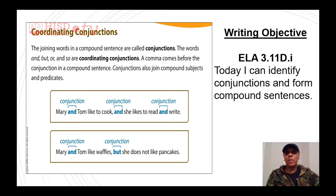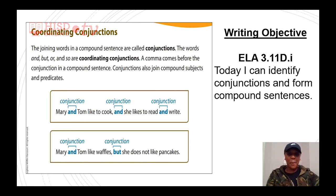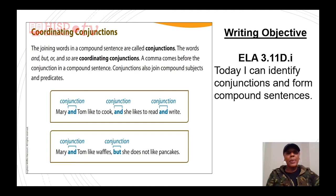Conjunctions can also be used to join compound subjects and predicates. For example: 'Mary and Tom like to cook, and she likes to read and write.' In this sentence, 'and' joins the compound subject Mary and Tom. Then the conjunction 'and' joins the two simple sentences — 'Mary and Tom like to cook' with 'she likes to read and write' — making it a compound sentence. Another conjunction joins the predicates read and write.